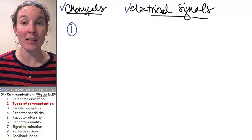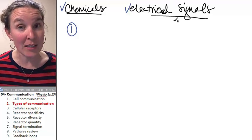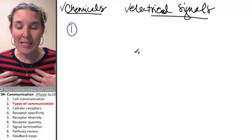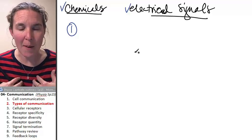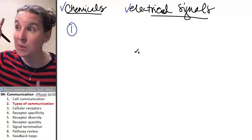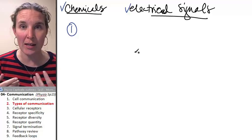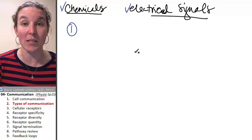Sometimes that information is in chemical format, sometimes it's in electrical format. Either way, the cell knows how to interpret that message. A responding, receiving cell down the line somewhere knows how to interpret and understand the message that was sent.